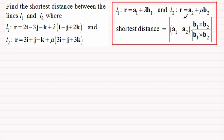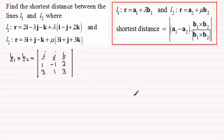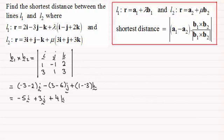So the first thing that we need to do is to work out the vector cross product between the two direction vectors for our lines, B1 and B2. So taking B1 to be i minus j plus 2k and B2 to be 3i plus j plus 3k, then what we get is this. B1 crossed with B2 is equal to the determinant of those two vectors B1 and B2. And working this out in the usual way gives us this result here: minus 5i plus 3j plus 4k.